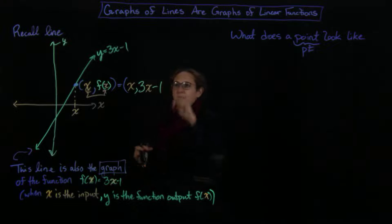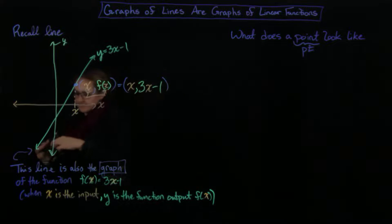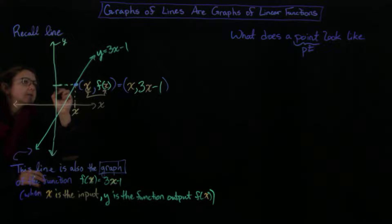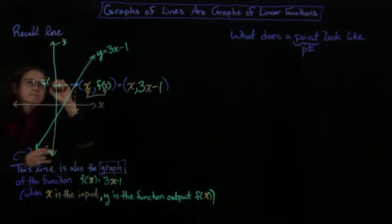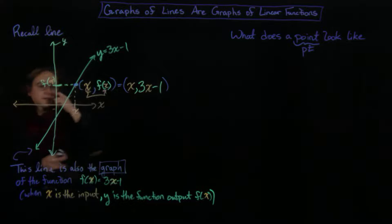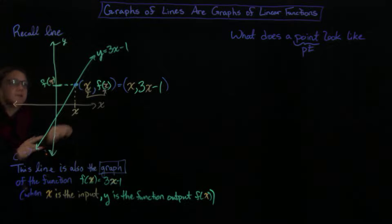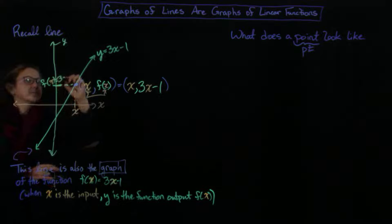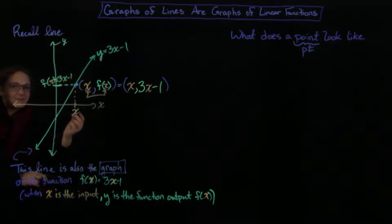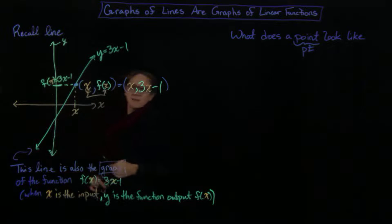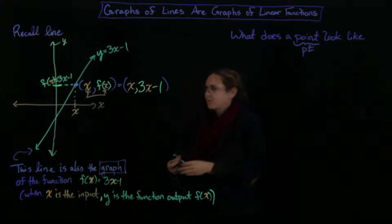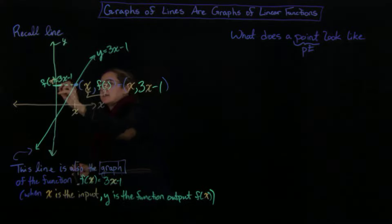So every point looks like this — this is telling me the height, which is my f of x, which is the same thing as 3x minus 1. If my horizontal coordinate is x, then the corresponding vertical coordinate is f of x, which in this particular circumstance is 3x minus 1.